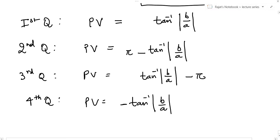Second quadrant, it is π minus tan inverse b by a. Third quadrant, it is tan inverse mod b by a minus π. And in the fourth quadrant it is minus tan inverse mod b by a.